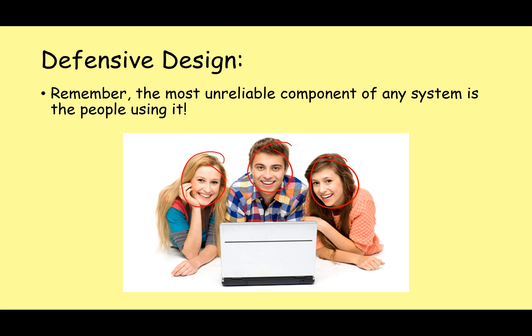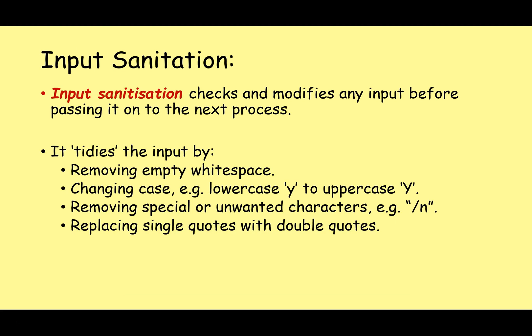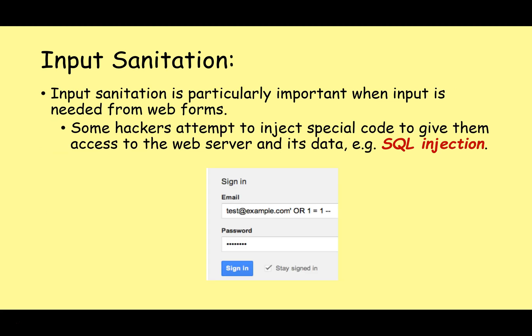You should always anticipate the misuse of your system when you design it, because either accidentally or deliberately, people will give you the wrong input. Input sanitation is one way of dealing with this. Input sanitation checks and modifies any input before passing it on to the next process — it tidies up the input. For example, by removing empty white space, changing the case of characters, or removing special unwanted characters like newline characters.